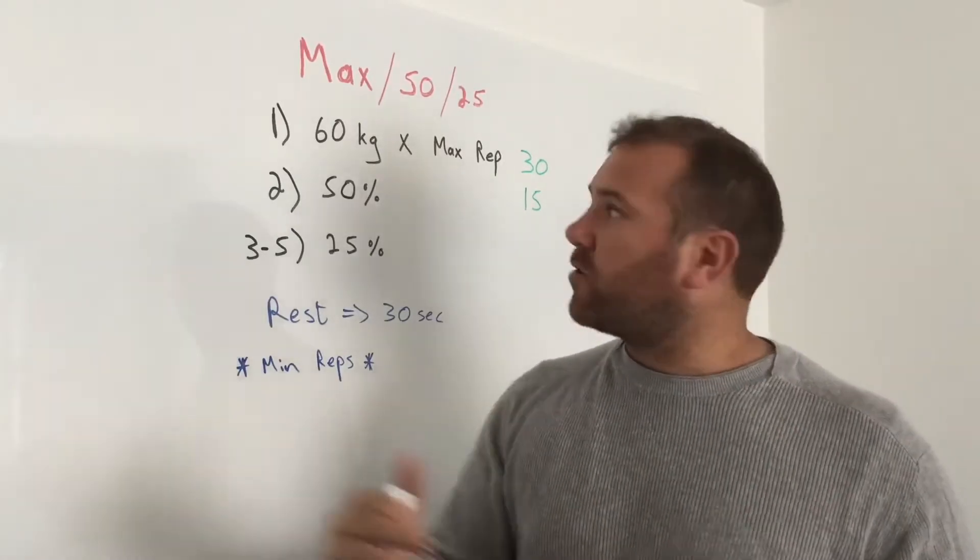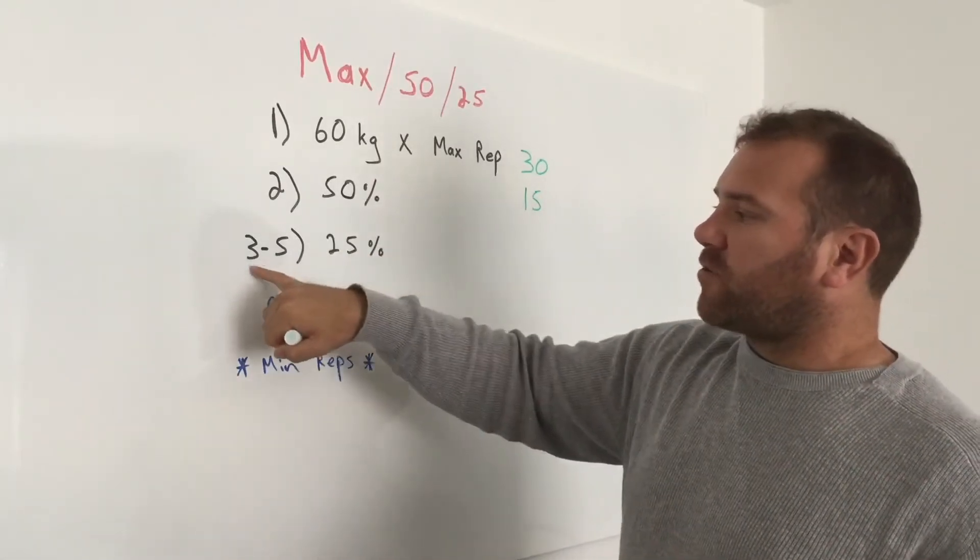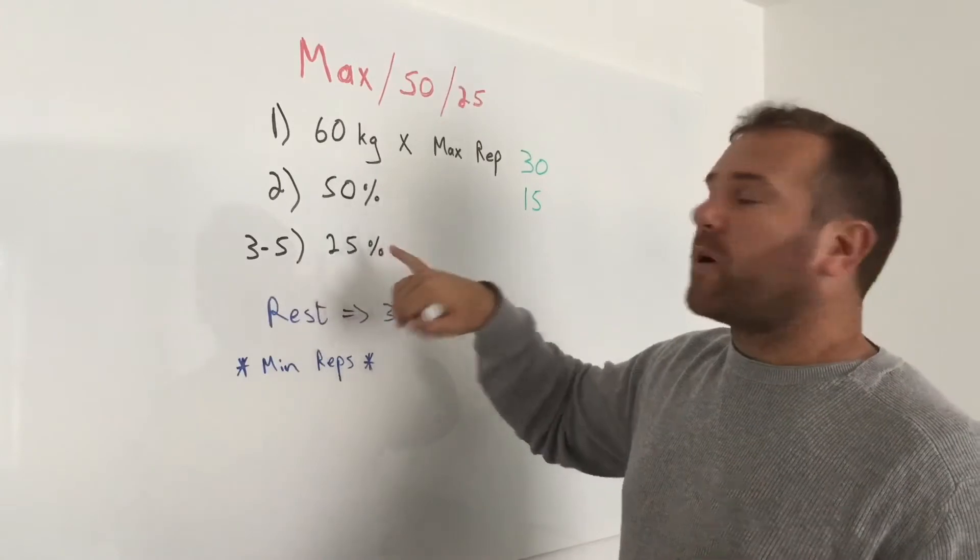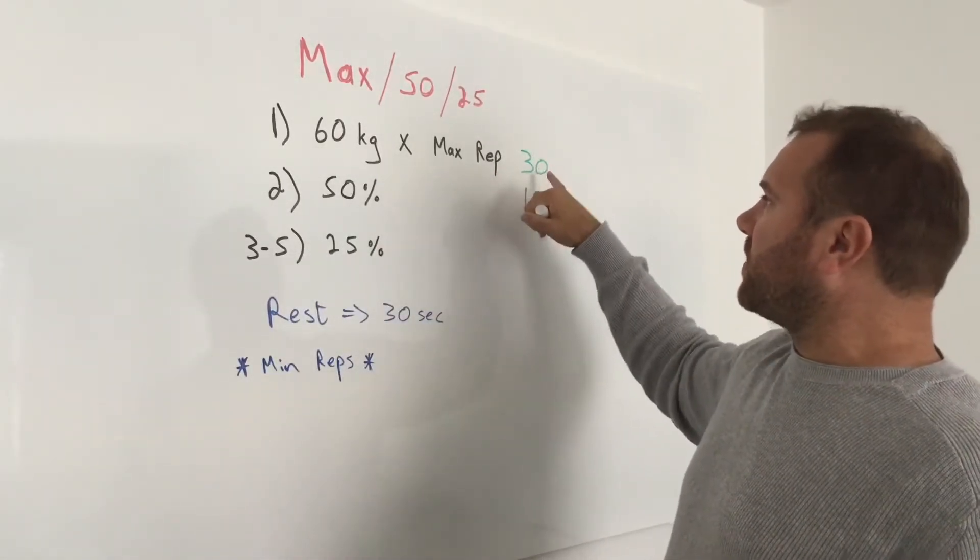We rest 30 seconds, then for rounds three to five we're doing 25% of your maximum rep. So 25% of 30 is 7.5, but we're going to round it up so that's 8 repetitions.